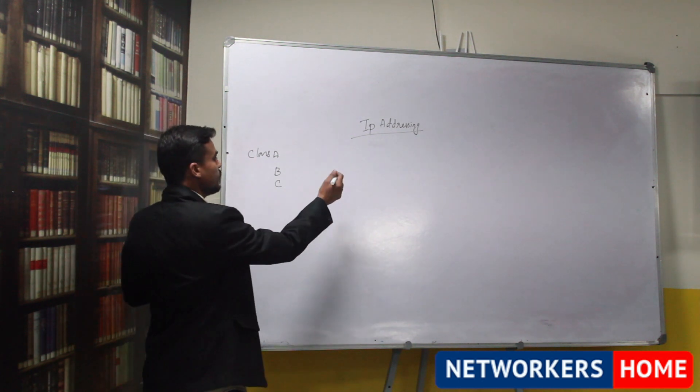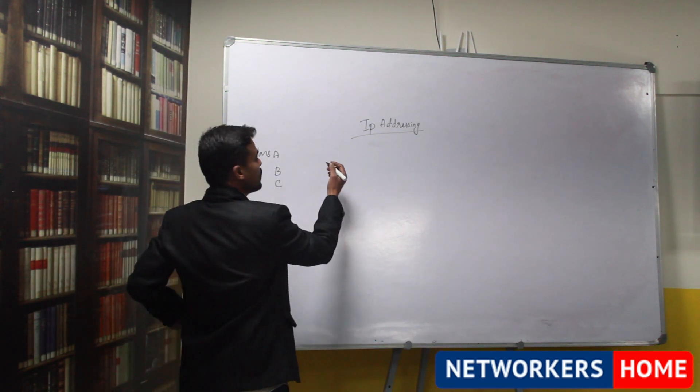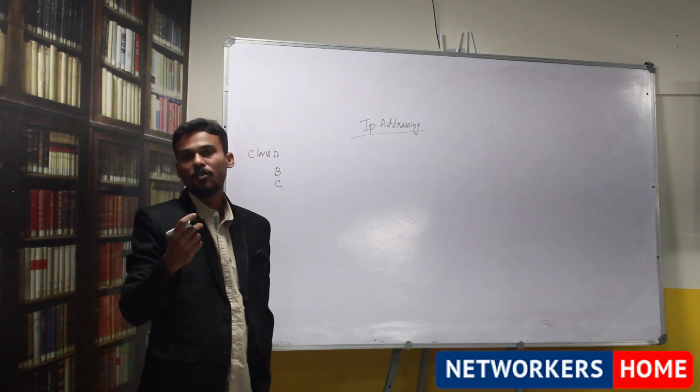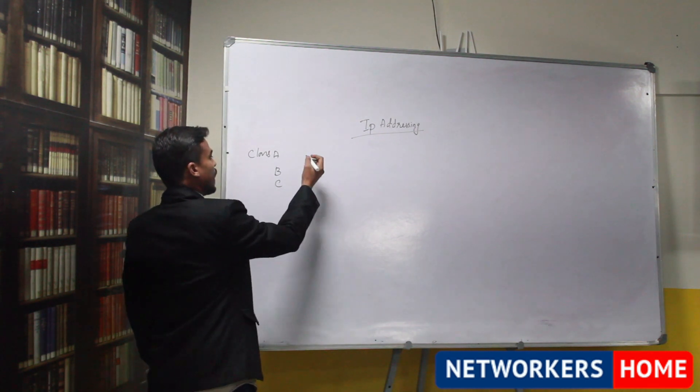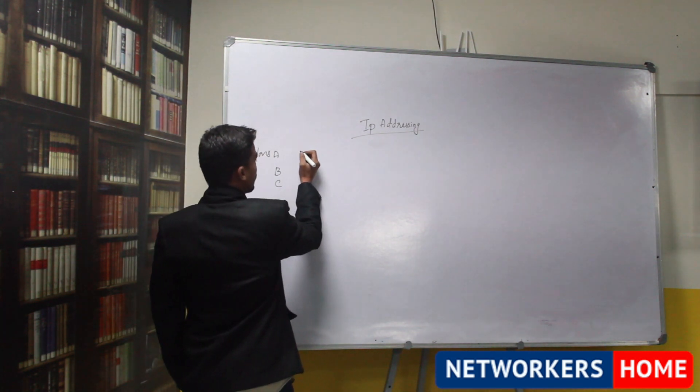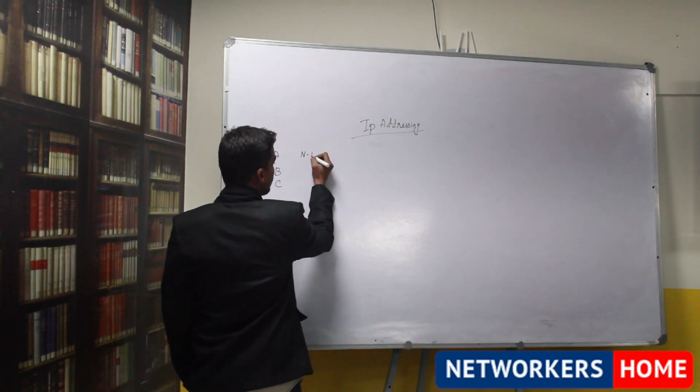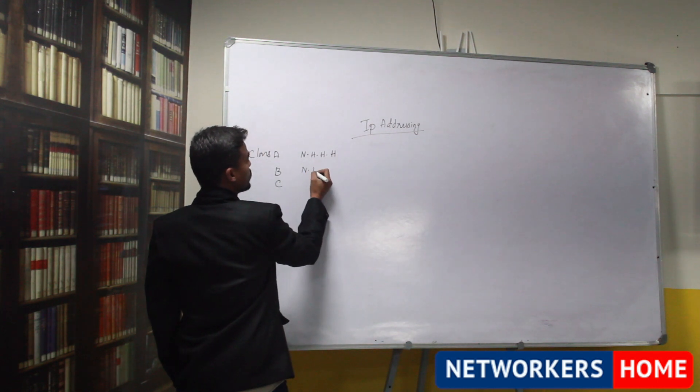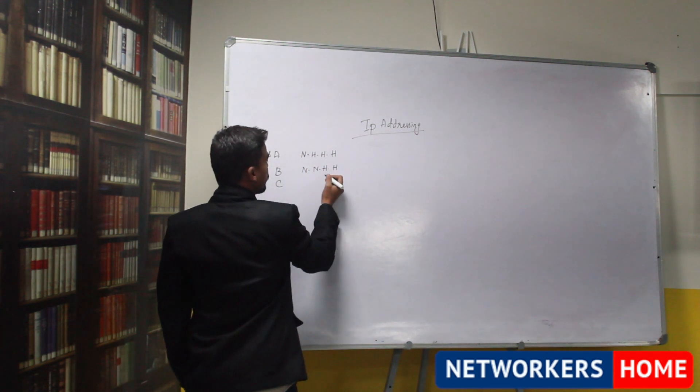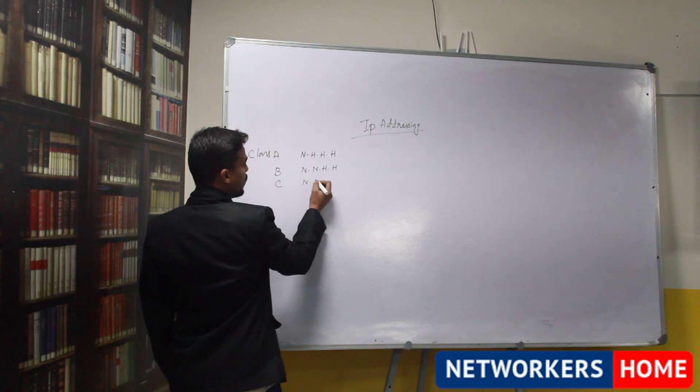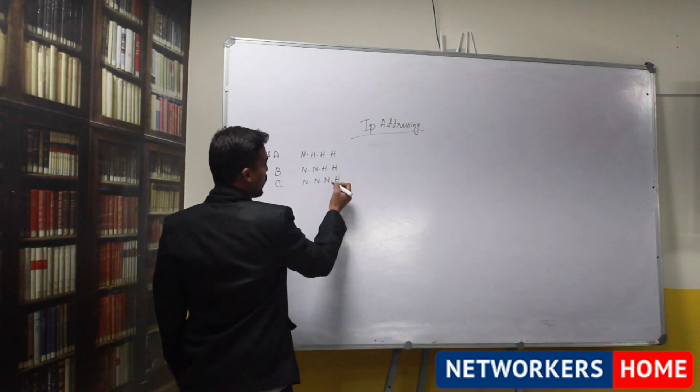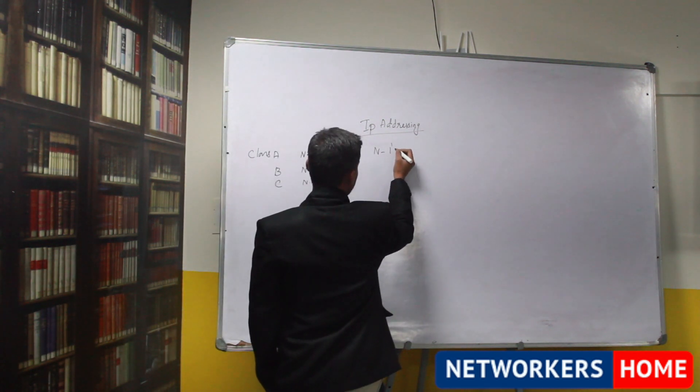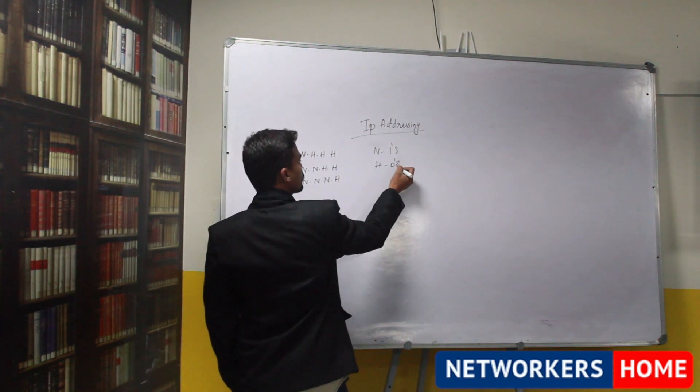In the previous session we have seen class A, B, C. So what is the structure of these classes? Basically the IP address has network bits as well as host bits. According to class A, IANA is assigning eight network bits for class A and remaining for host bits, 16 network bits for class B remaining for host bits, 24 bits for class C and remaining for host bits. It is denoted as network bits as ones, host bit as zeros.